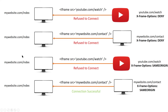Now let's consider the third scenario. We have our website with an iframe that points to youtube.com, and our XFrame Options header is set to same-origin. Once again, our client will refuse to connect because when XFrame Options is set to same-origin, you cannot point to an external website.